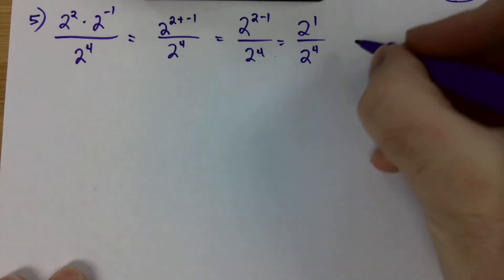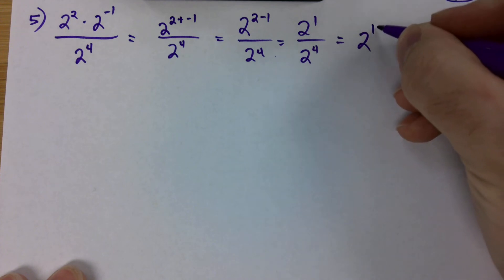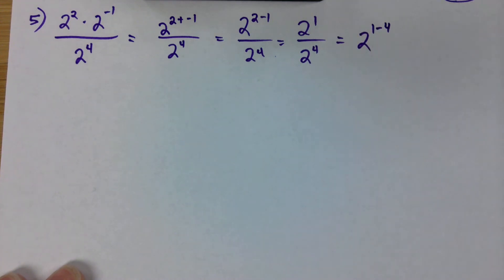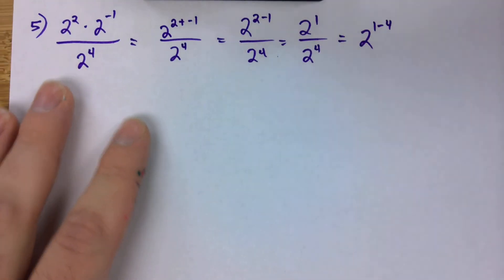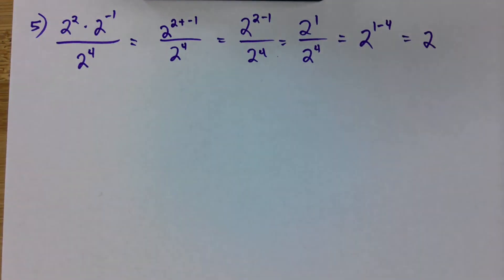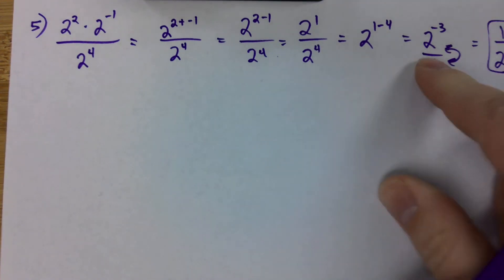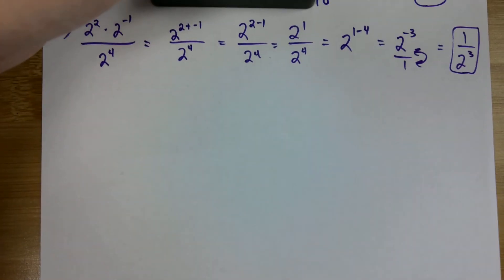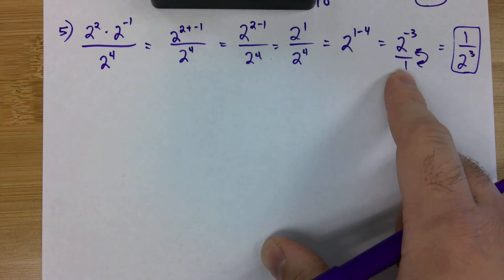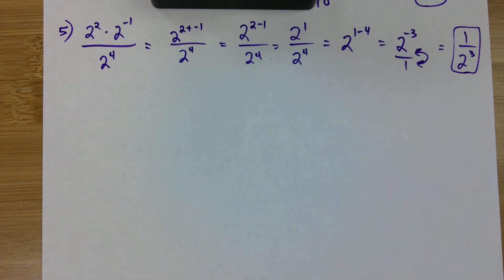Now, we're going to use the quotient rule, subtracting downwards, one minus four for the exponent. That gives us two to the negative three. And now, we got to do our flip. Put it over one. Flip it around. One over two to the third. So, whenever we have a negative exponent, make it a fraction over one. Flip the top and the bottom. And then make the exponent positive.